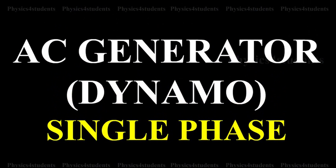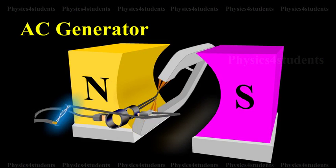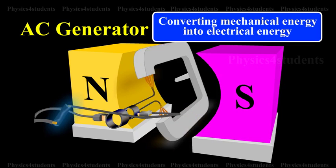AC Generator Dynamo Single Phase. The AC generator is a device used for converting mechanical energy into electrical energy.